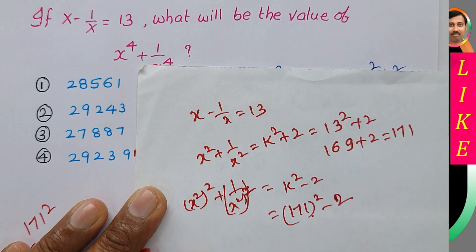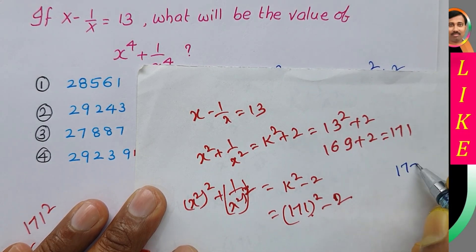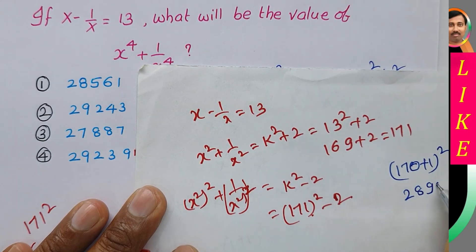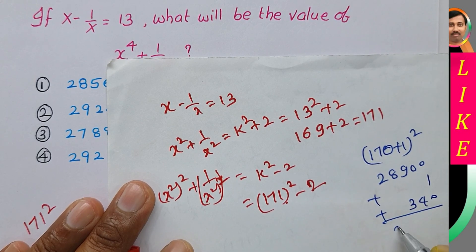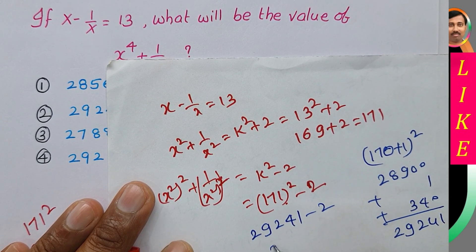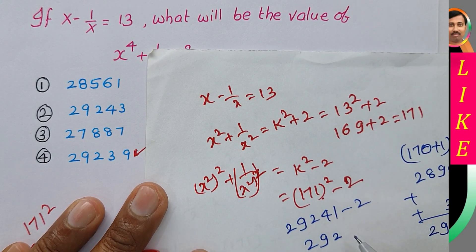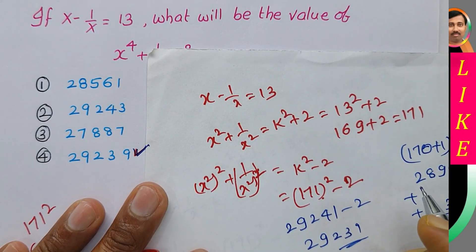171 squared means 171 into 171. Using (170 + 1) squared: a squared is 28900, b squared is 1, and 2ab is 340. Their sum is 29241. So 29241 minus 2 equals 29239. Option 4 is the correct answer. Thank you.